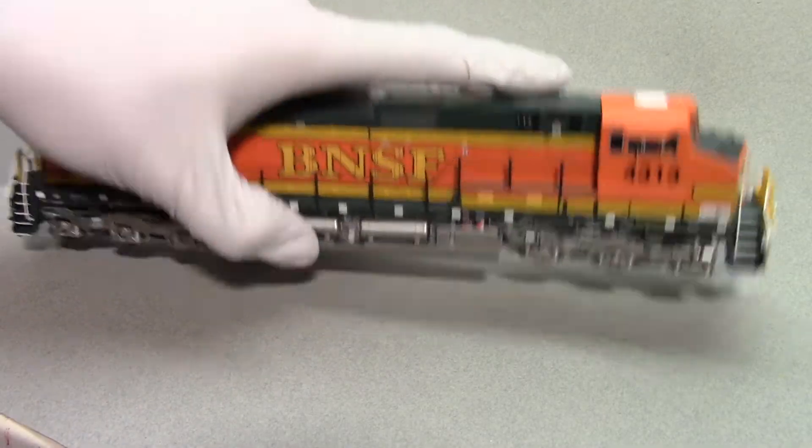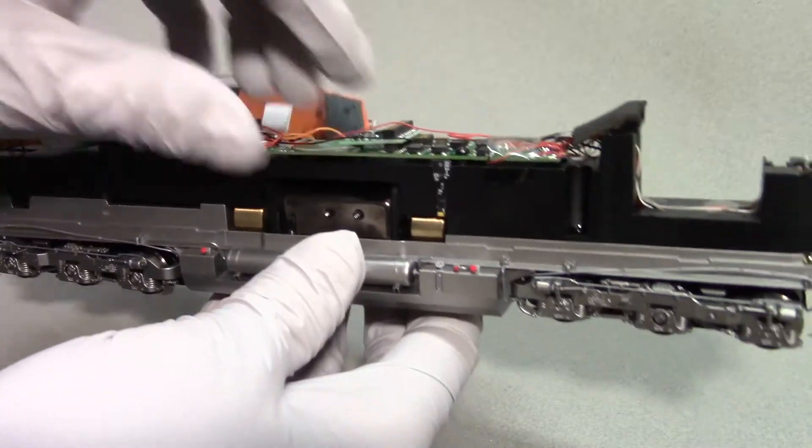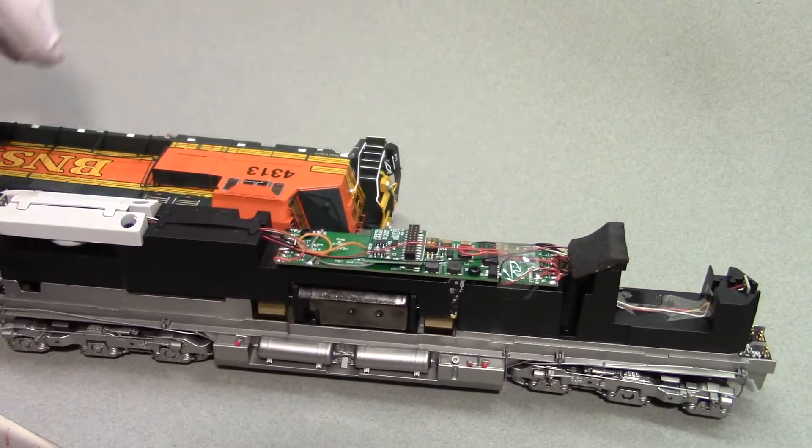Remove the coupler pockets from front and rear and the shell simply slides off on the Scale Trains model revealing the inner workings of the locomotive.